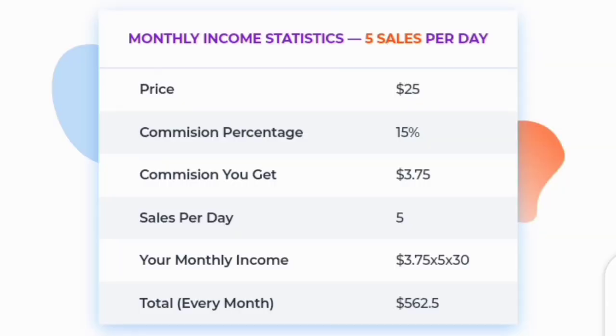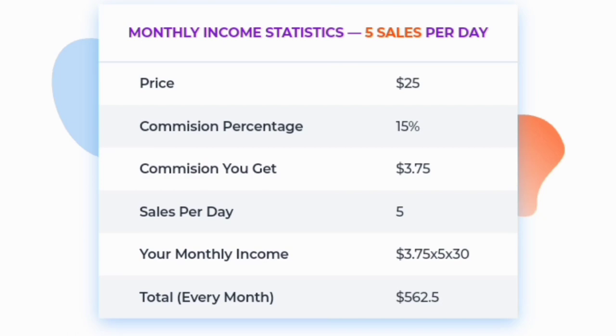To make money on Master Bundles, the first thing you can do is join the affiliate program. For the Master Bundles affiliate program, you get to refer other people to either buy or sell products using your affiliate link, and you get a 5% bonus from every product they buy or sell. For instance, if a product is sold at $25 with a 15% commission, the commission you get is $3.75. Your monthly income would be $3.75 times 5 times 30, totaling $552.50 — graphic designers are making over $500 plus on this website monthly as passive income.